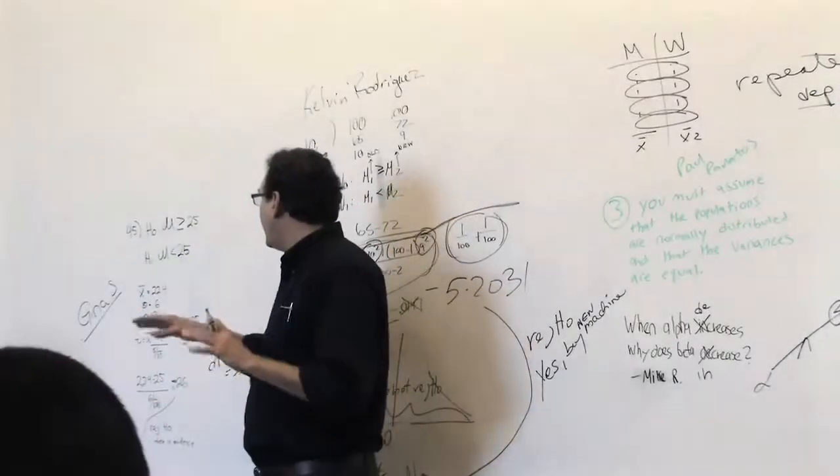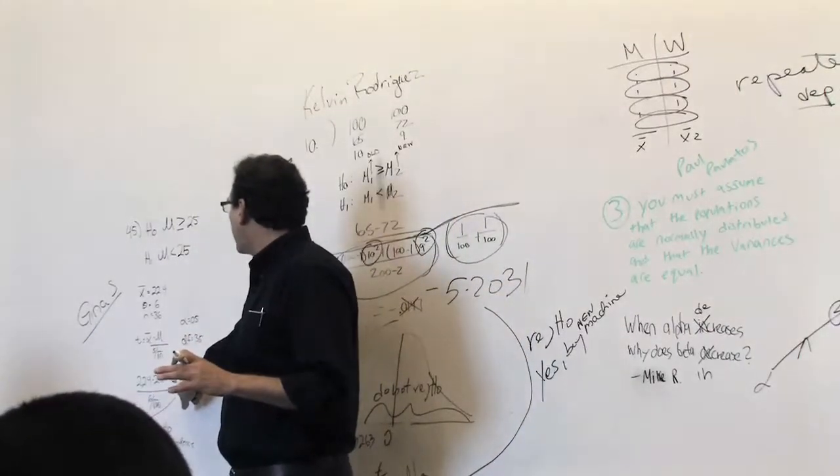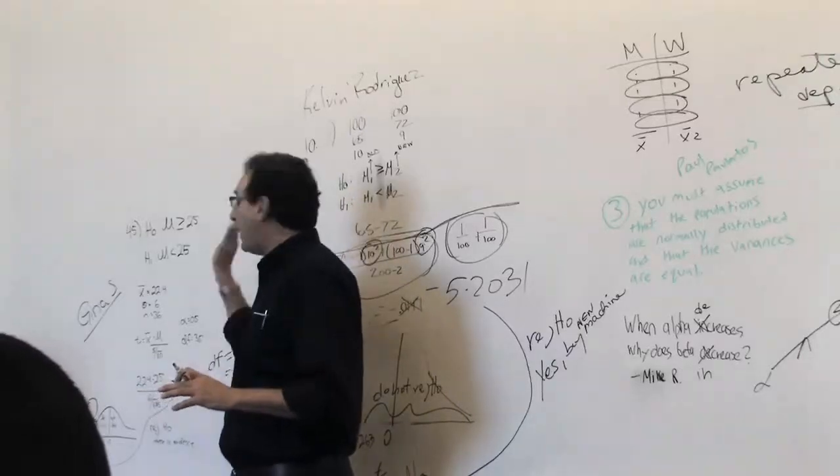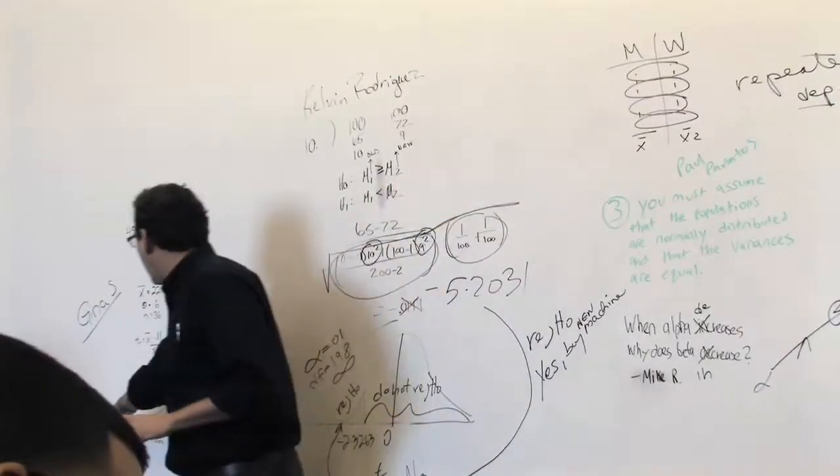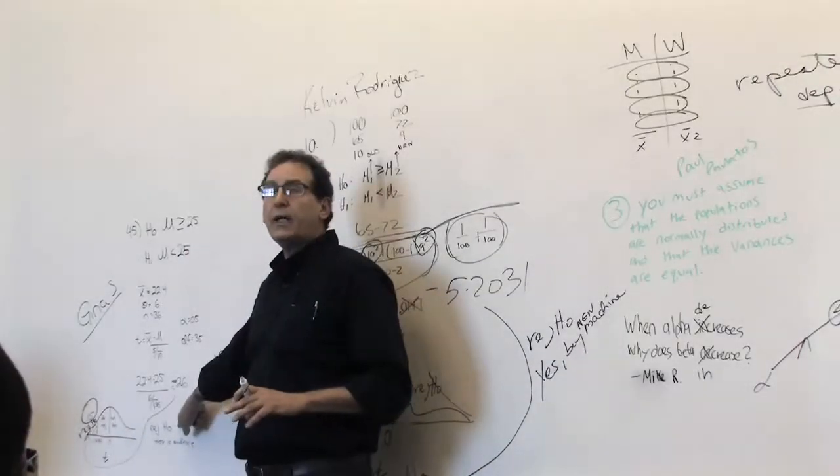And step number four, which is the easiest but the most important step, is to compare the number you've got over here to the boundary. Now, where is minus 2.6? Minus 2.6 is even more negative than 1.6. And therefore, you're in the reject region. So first of all, she says correctly, to reject H0.